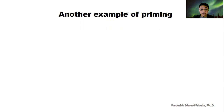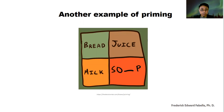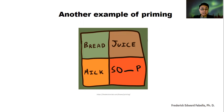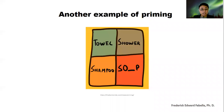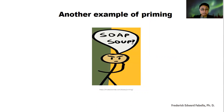I'll give you another example of priming. Look at these three words, and then look at the word with the missing letter, and try to fill in the missing letter. Did you choose a letter? What word did you form? Now I'll give you another example — look at the three words again, and then fill in the missing letter in the fourth word. Did you choose a different letter? I'm sure you did. The first one, did you choose soup? And the second one, did you choose soap? Yes, that is also an example of priming.